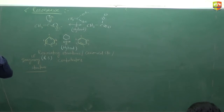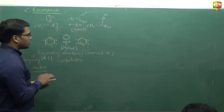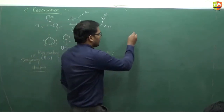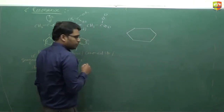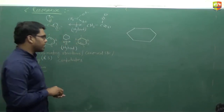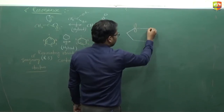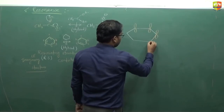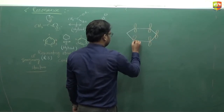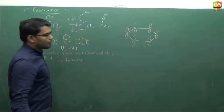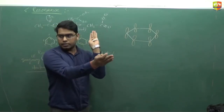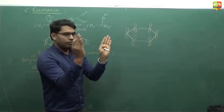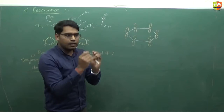The first condition is the molecule must be planar. Why is it required? Because delocalization means the shifting of an electron pair — whether it is a pi electron or lone pair. In benzene, for example, each carbon has a p-orbital, and all these orbitals are parallel. Because they are parallel, the shifting of electron pairs is possible. If the molecule is not planar, one p-orbital faces this way and another that way, so overlap is not possible. When p-orbitals face each other, only then overlap is possible and a pi bond forms. That's why a planar molecule is required.